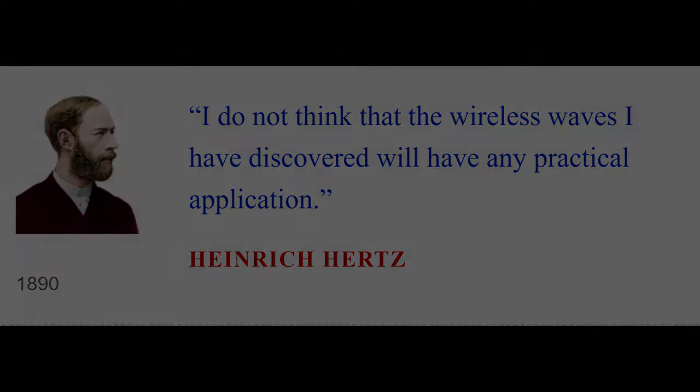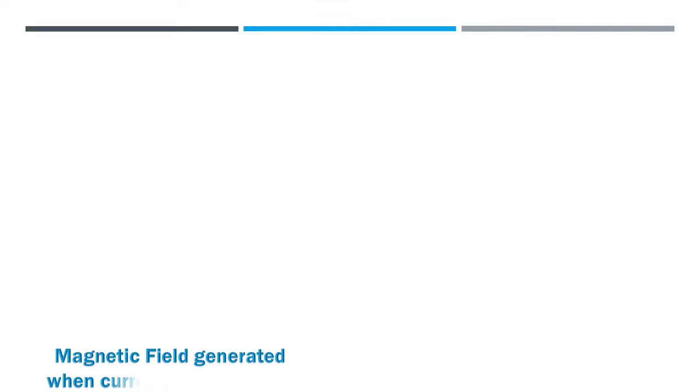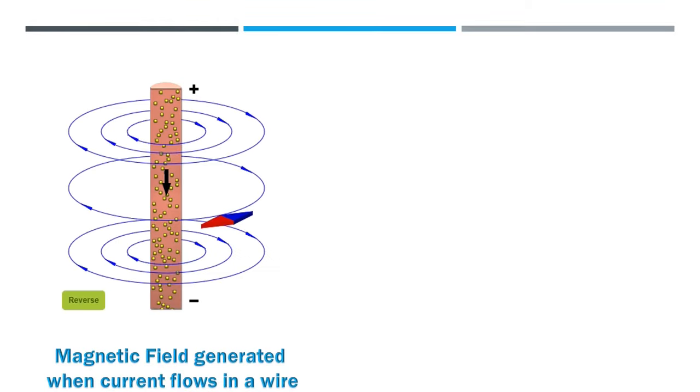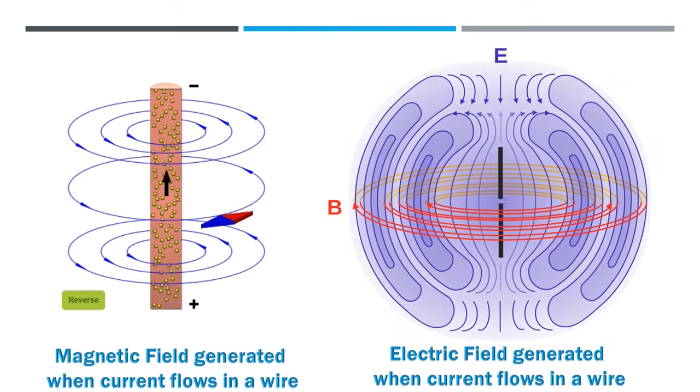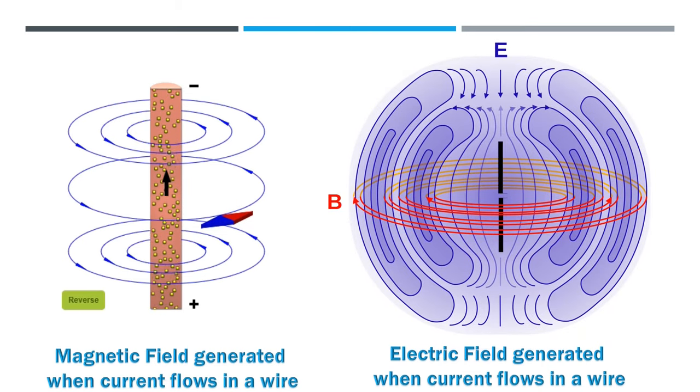Now let's understand the simple concept of electric and magnetic waves. When you pass current through a wire, an invisible magnetic field is generated around the wire in the form of concentric circles. But when you pass an AC current through a wire, the magnetic field will change its magnitude and direction, and due to the AC current, there is also an electric field generated around the wire.